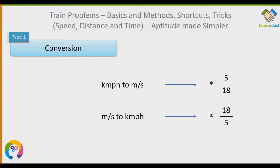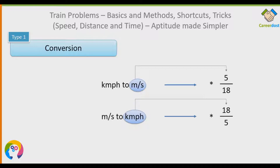People get confused about multiplying by 5/18 or 18/5. Here's a simple way to remember: if your answer needs to be in meter per second, remember that meter is the smallest unit, so the smallest number — 5 — will be in the numerator. Similarly, kilometer is the higher unit, so when converting to km/h, the highest number — 18 — will be in the numerator.